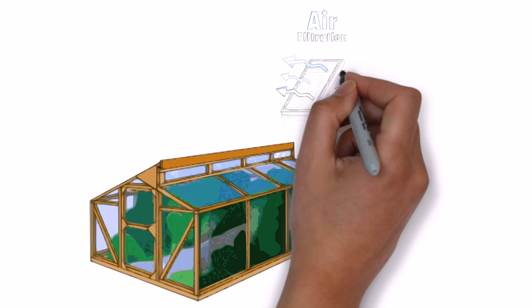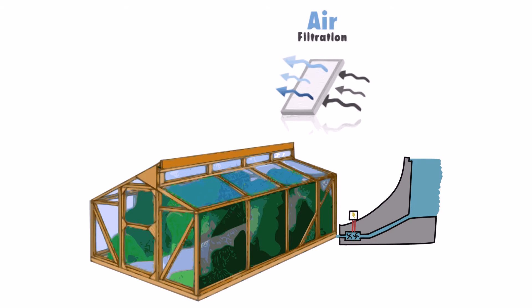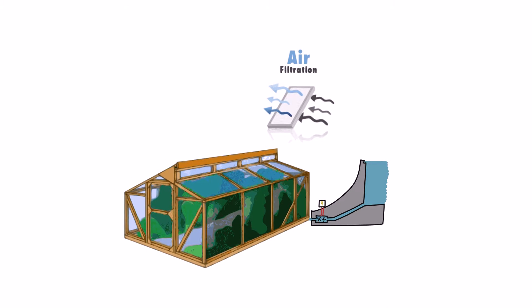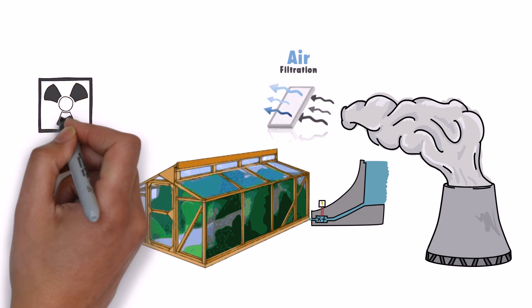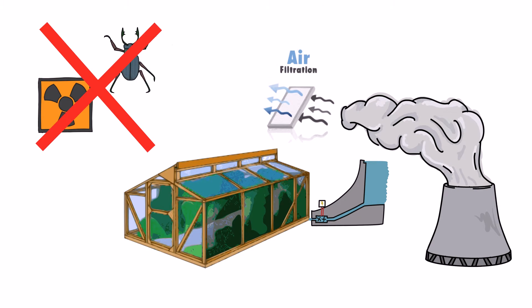Growing inside sealed greenhouses that have state-of-the-art air and water filtration systems that keep pollution out, preventing contamination and the need for pesticides.